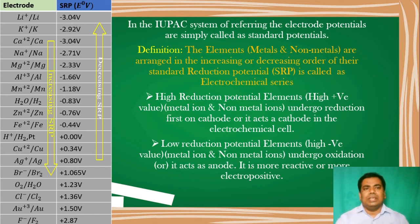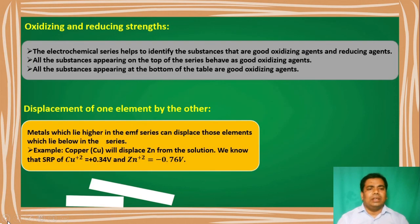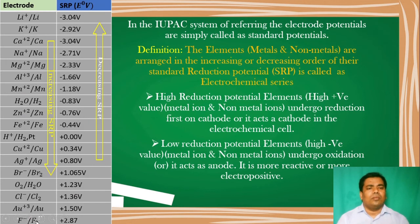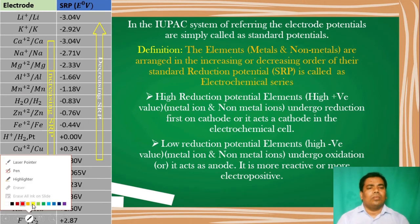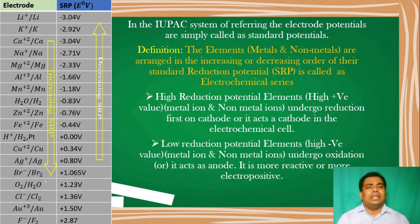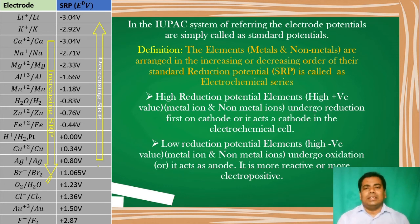This order indicates increasing order — the reduction potential values increase from top to bottom. From bottom to top, the values are decreasing. We can arrange elements in either increasing or decreasing order of their standard reduction potential values; this arrangement is known as the electrochemical series.